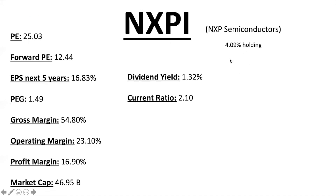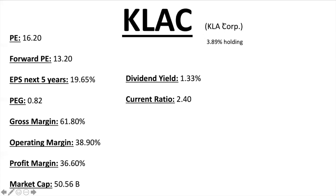NXP Semiconductors has a 4.09% holding in the ETF. PE ratio 25.03, Forward PE 12.44, EPS next five years 16.83% — PEG ratio 1.5, which is solid and under two. Margins are fantastic: gross margin over 50%, profit margin just under 20% — hopefully these numbers can get better and better. Market cap just under $50 billion, dividend 1.32%, current ratio 2.1.